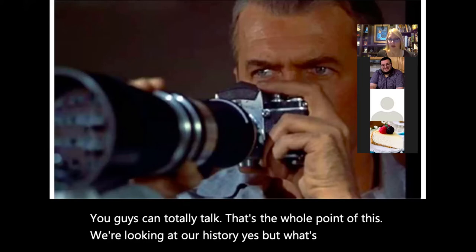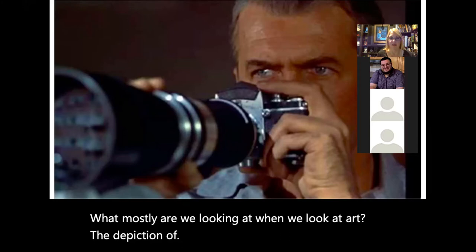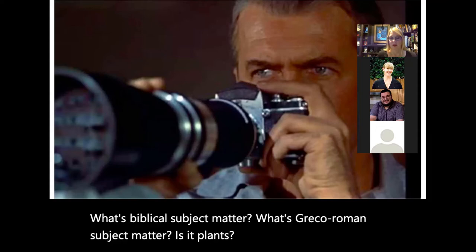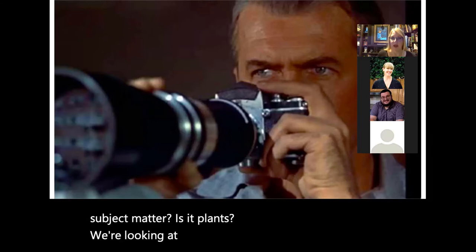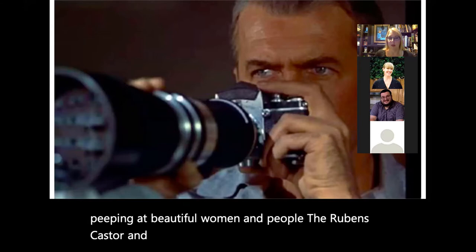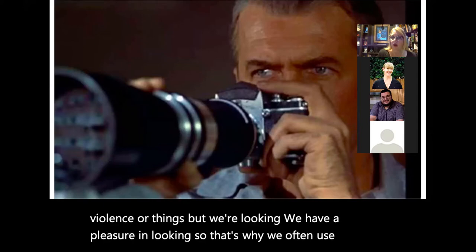How does that relate to art history? What are we often looking at? We're looking at people — mostly naked people. Biblical subject matter, Greco-Roman subject matter — we're peeping at beautiful women and people. Think of Rubens, Castor and Pollux Taking the Daughters of Leucippus — sex, violence, looking. We have a pleasure in looking, which is why we use this film article in relation to art history.